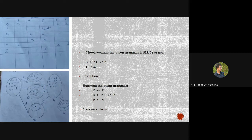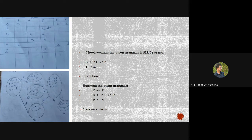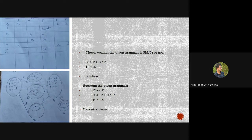Building the SLR(1) parsing table with six states (0–5) and action columns id, plus, dollar, and goto columns E and T: For state 0 — id goes to S3; E goes to 1, T goes to 2 in goto. For state 1 — accepted at dollar. For state 2 — plus goes to S4; dollar gives R2 (reduced by E→T, FOLLOW(E)={$}). For state 3 — plus and dollar give R3 (FOLLOW(T)={+,$}).